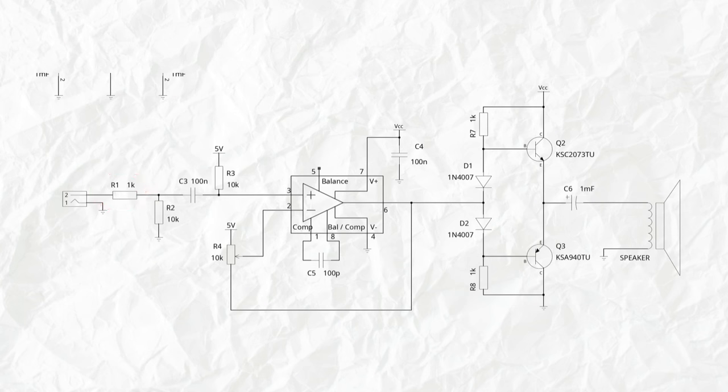Then we have to bias it to half of the supply voltage because the signal is going to swing around this point.